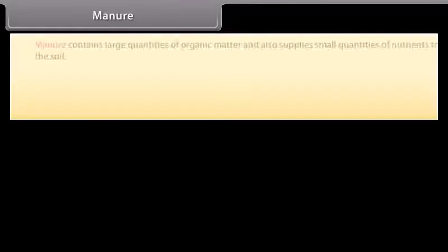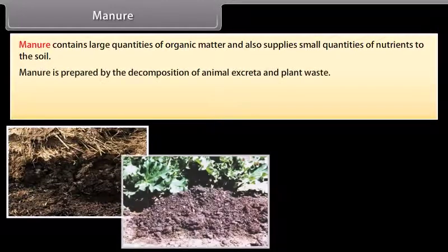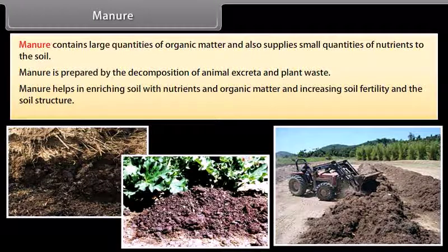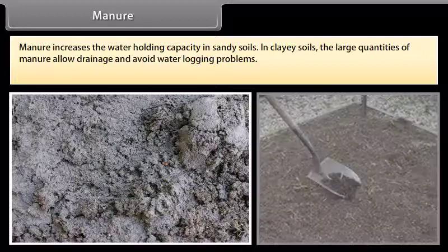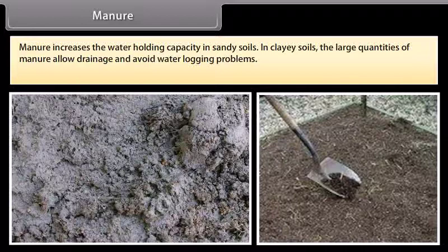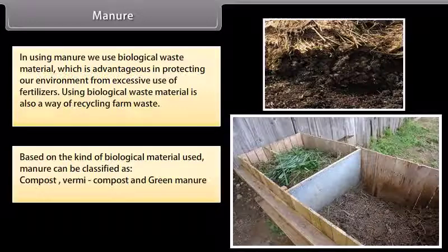Manure contains large quantities of organic matter and supplies small quantities of nutrients to the soil. It is prepared by the decomposition of animal excreta and plant waste. Manure helps enrich soil with nutrients and organic matter, increasing soil fertility and improving soil structure. It increases water holding capacity in sandy soils, and in clay soils, large quantities of manure allow drainage and avoid waterlogging. Manure can be classified as compost, vermicompost and green manure.